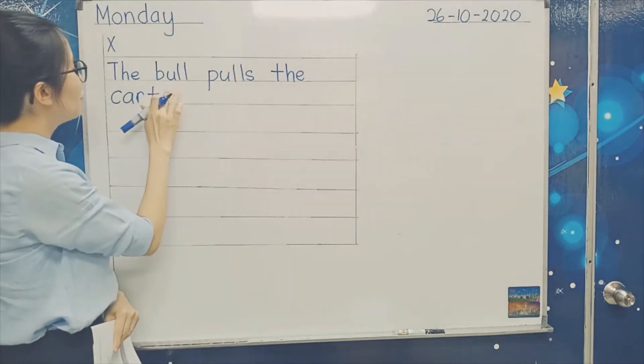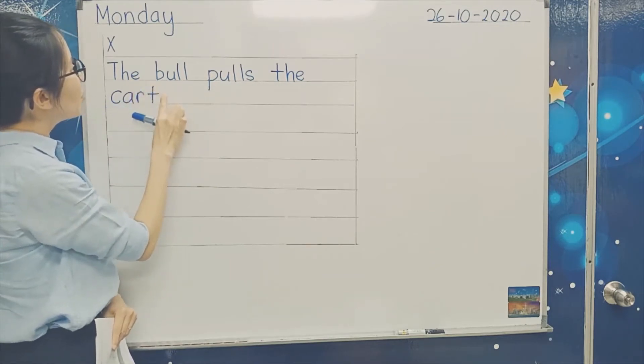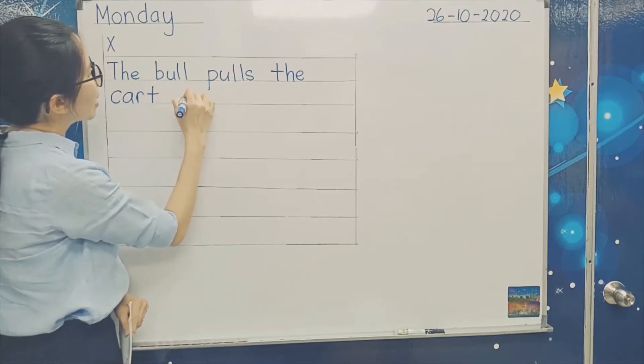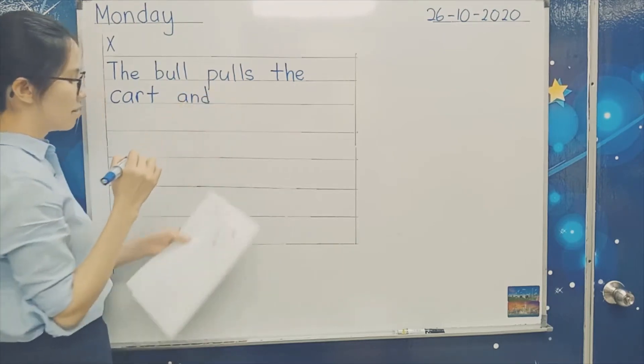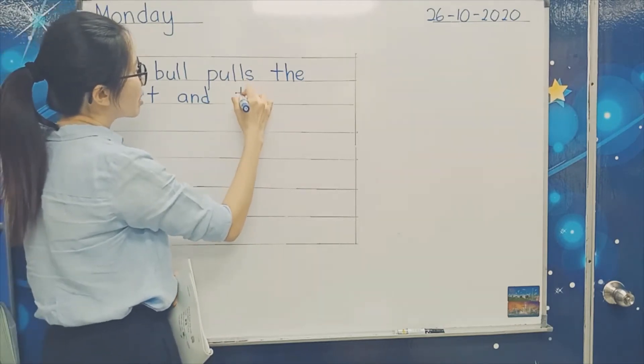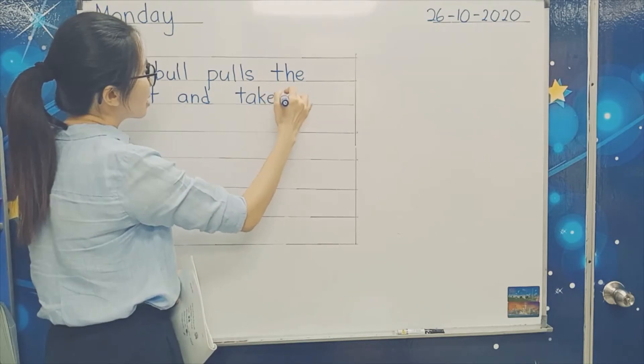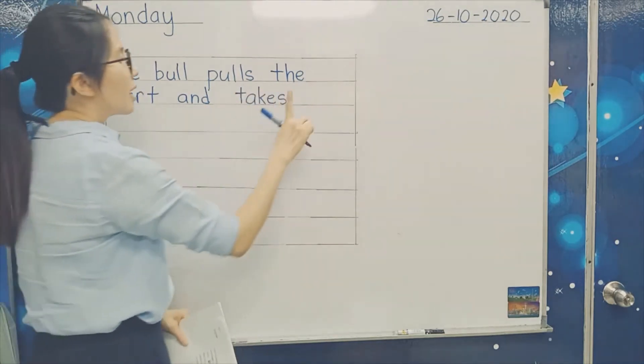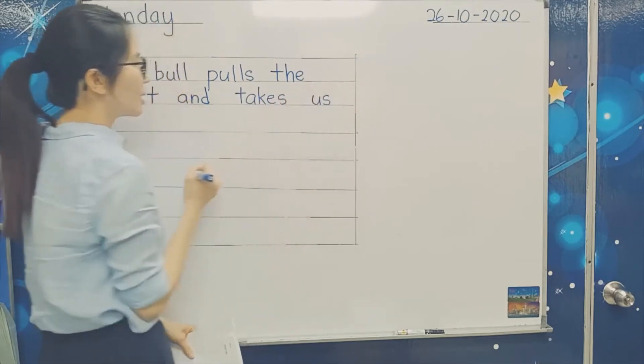So I'm going to write down here. You write C-A-R-T, cart, and you press, put a full stop. Oh sorry, no full stop. Okay, continue, put your finger here, and then you write A-N-D, and. And then another finger, T-A-K-E-S, takes. Another finger, U-S, us.